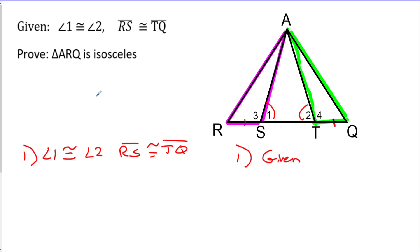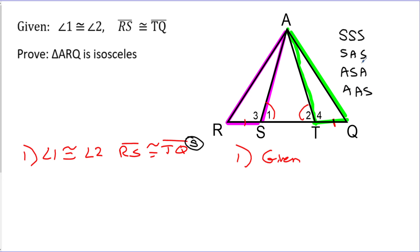I kind of worked backwards and said, what do I need to prove ARQ? It looks like if I can work on these two little triangles, that's the approach. So here are the things I'm going to use. If you remember from proving triangles are congruent, here are your options: side-side-side, side-angle-side, angle-side-angle, and angle-angle-side. These are the four non-right triangle shortcuts to show two triangles are congruent. It looks like I have one side. Now I've got to figure out where the other stuff is going to come from. I'm just going to stare at the picture and try to figure out which of these I'm going to use.